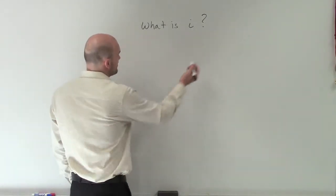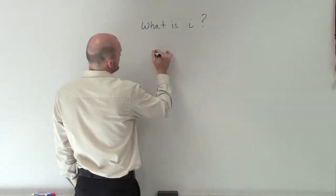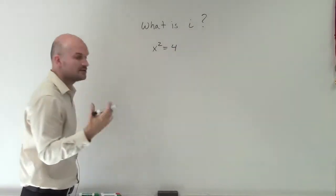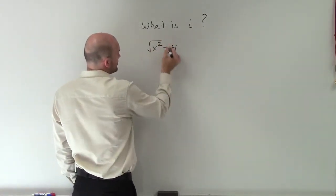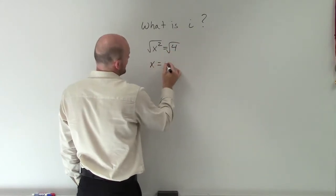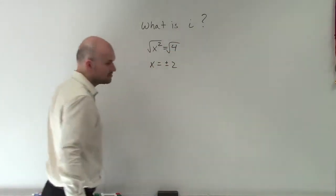And the way that the imaginary unit comes from is if we had a quadratic equation, let's say I had x squared equals 4. Well, to go ahead and solve this, we would make sure that we take the square root on both sides. You could say that x would equal plus or minus 2.